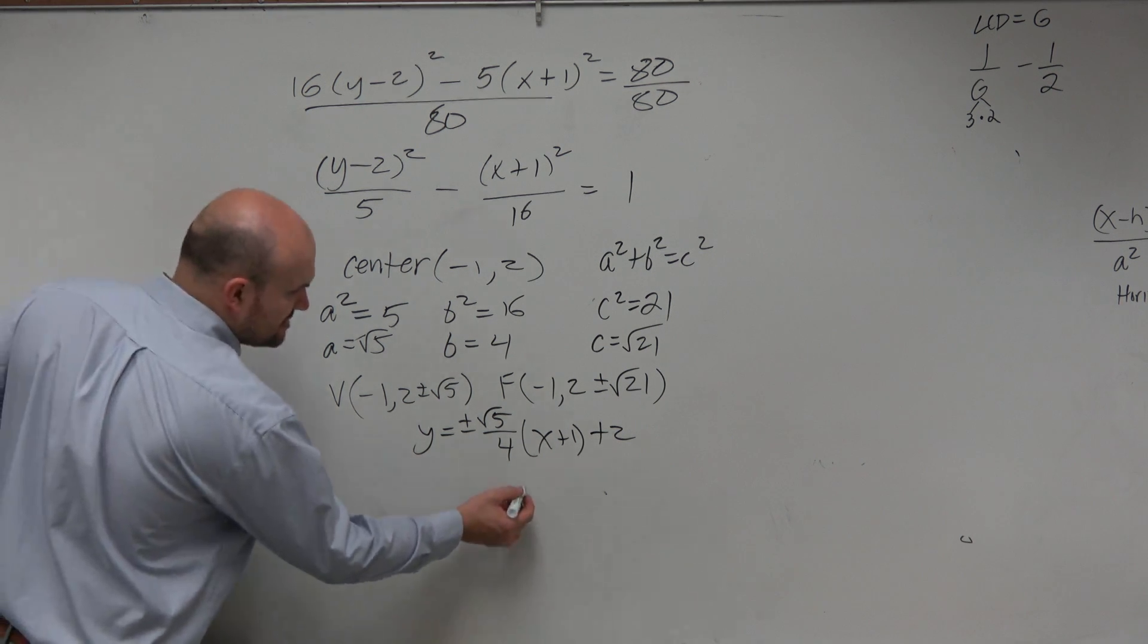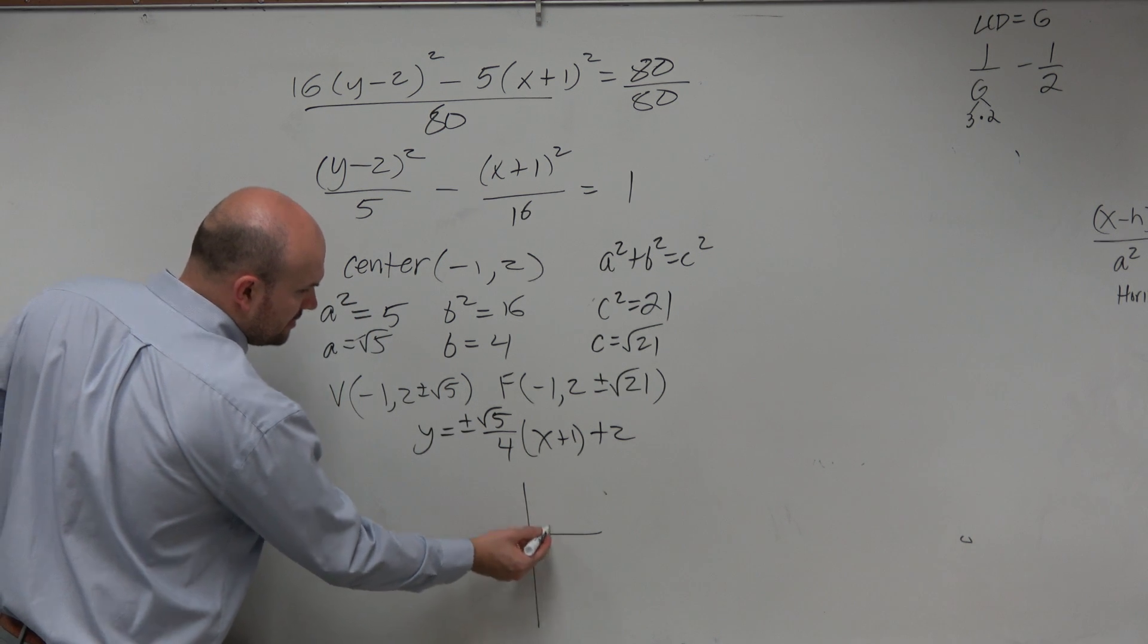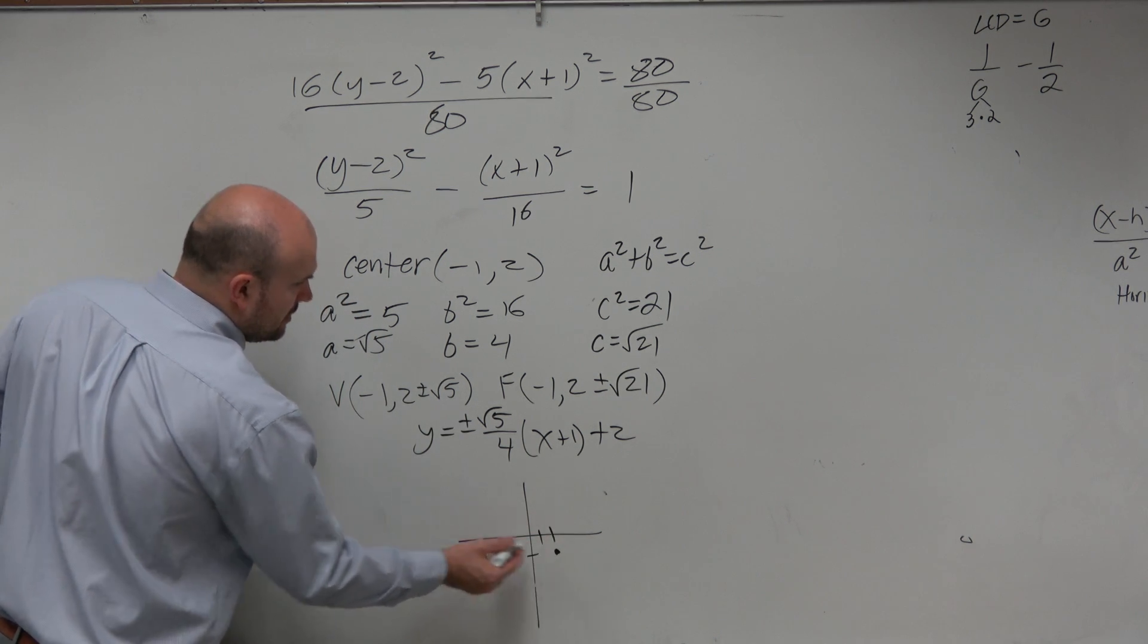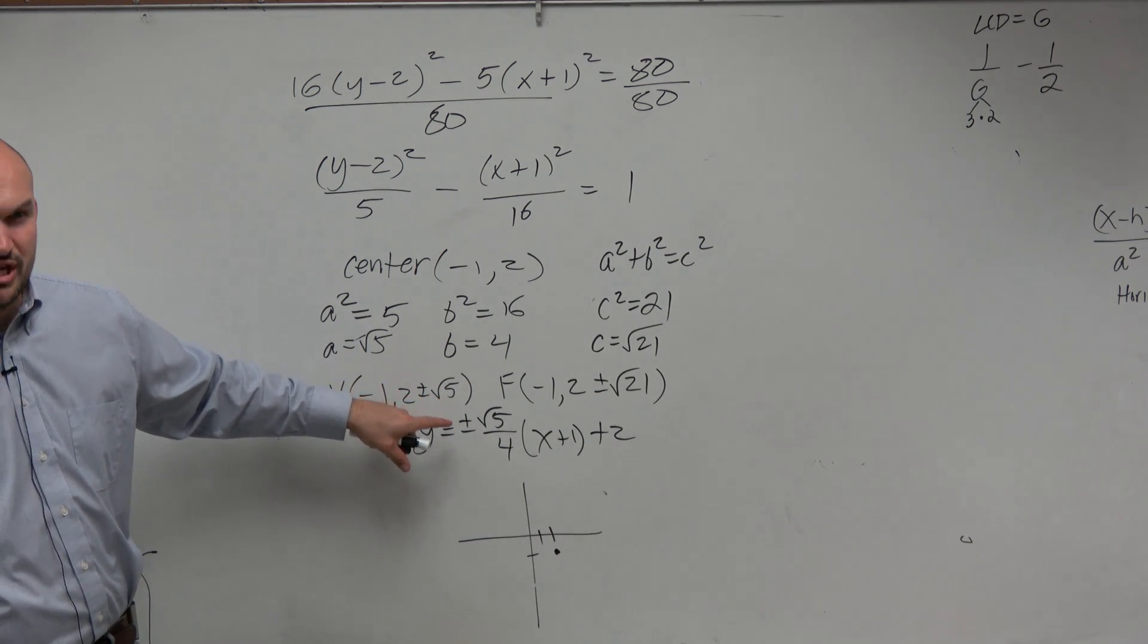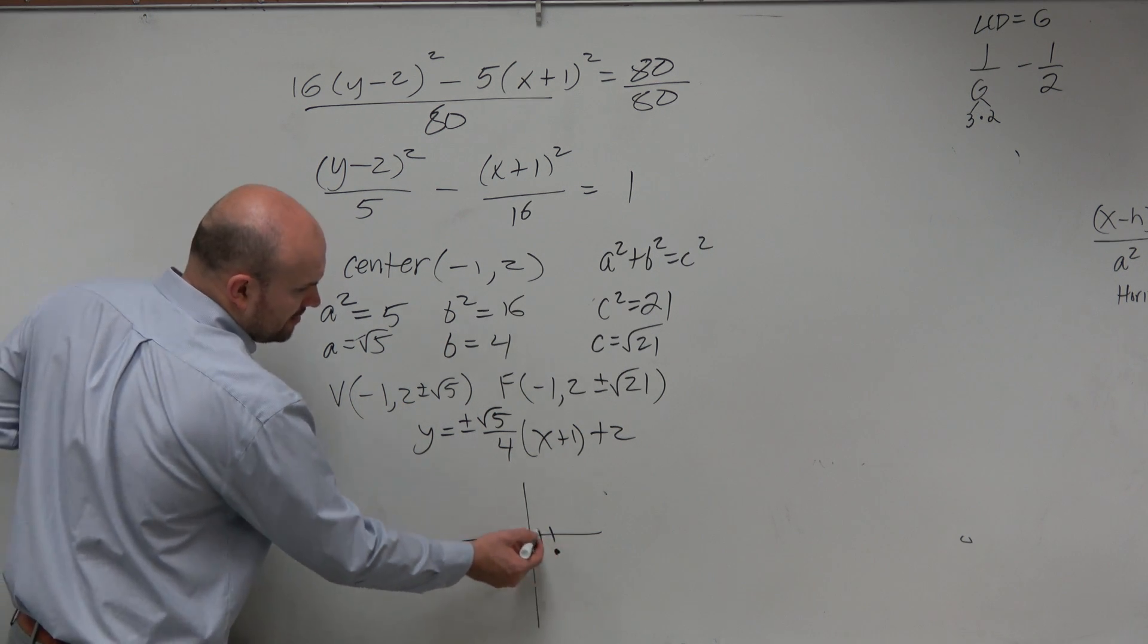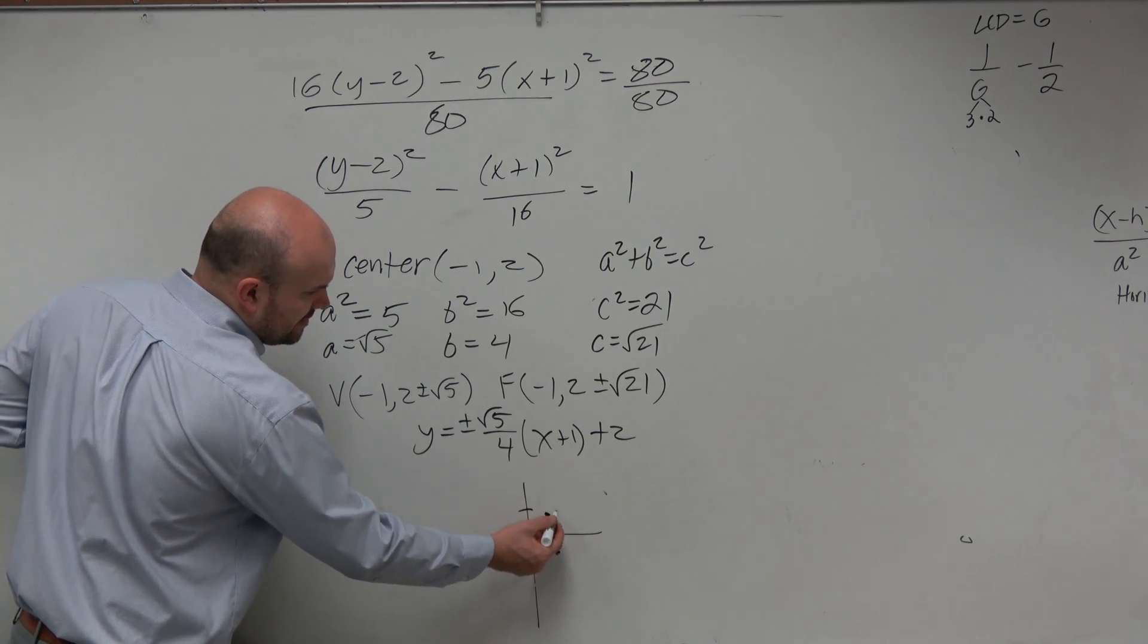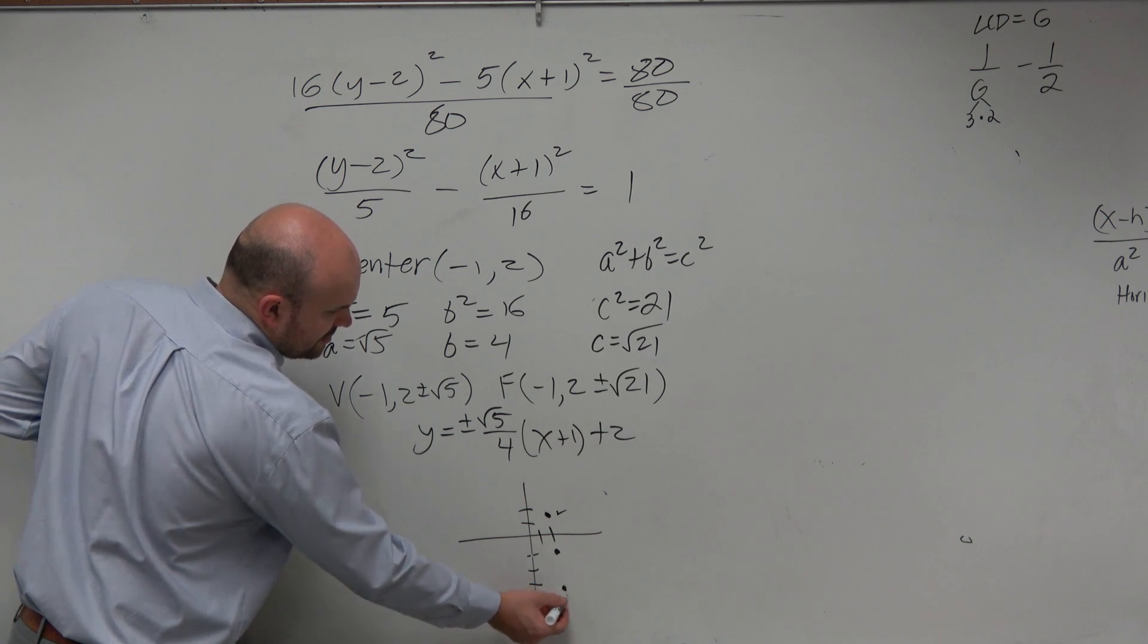And then if I wanted to sketch this, my center is at 2, negative 1. My vertices is 2 plus or minus. So what is like square root of 5? That's roughly 2 and change, right? So I can just go up 2 between 2 and 3. There's one vertice, down 2 and change. There's my other vertice.